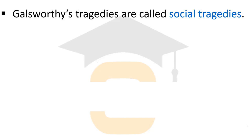Galsworthy's tragedies are called social tragedies because of the subject matter he introduced — he talked about social issues, social problems, corruption, and the exploitation of the lower classes in his works. His plays are regarded as social tragedies because they deal with serious social subject matter in a tragic mode.